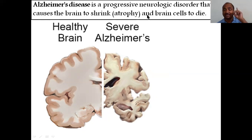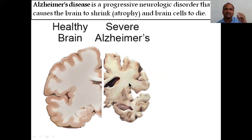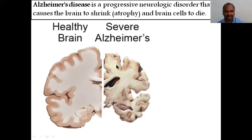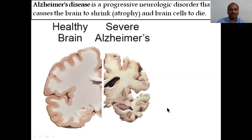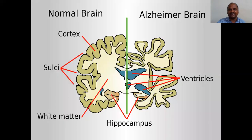Alzheimer's disease is a progressive neurological disorder. Progressive means it keeps progressing — degeneration starts to occur. It is a disorder that causes the brain to shrink — that is called atrophy — and causes brain cells to die. So, in severe Alzheimer's brain disease, compared to a healthy brain, we can see the differences. Keep in mind: shrinkage in the brain.